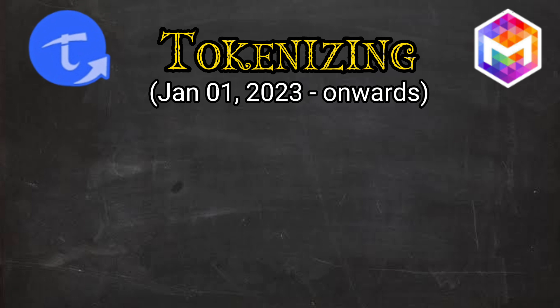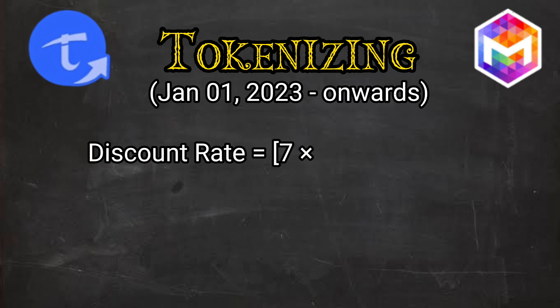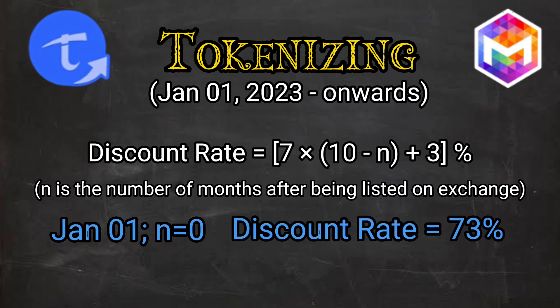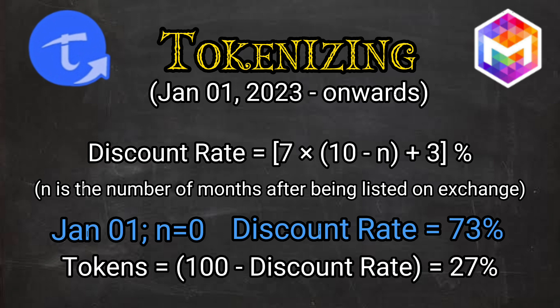Tokenizing will start from January 1st, 2023. To make it clear, no one will be able to tokenize all of their tokens at once. A discount rate will be applied to limit the one-way flow of coins into the market. On January 1st, 2023, when tokenizing starts, let's assume N equals 0 because until January there will be no exchange listed. Putting N equals 0 into the formula, the discount rate becomes 73%, meaning you will be able to tokenize 27% of your coins.